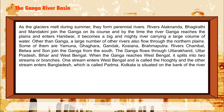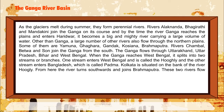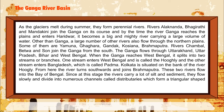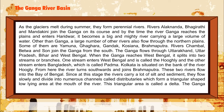Kolkata is situated on the bank of the River Hooghly. From here the river turns southwards and joins the Brahmaputra, and these two rivers flow into the Bay of Bengal. Since at this stage the rivers carry a lot of silt and sediment, they flow slowly and divide into numerous channels called distributaries, which form a triangular-shaped low-lying area at the mouth of the river. This triangular area is called a delta. The Ganga-Brahmaputra delta is the largest delta in the world.